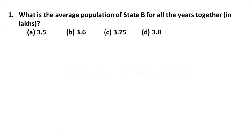Question 1: What is the average population of State B for all the years together? In lakhs, option A: 3.5, option B: 3.6, option C: 3.75, option D: 3.8. So here we have to find the average of State B for all the years together.